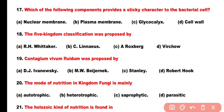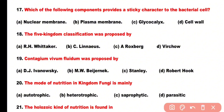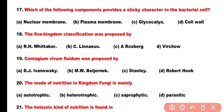Question number 17: Which of the following components provides a sticky character to the bacterial cell? Options: nuclear membrane, plasma membrane, glycocalyx, cell wall. Correct answer is option C. Glycocalyx provides a sticky character to the bacterial cell.